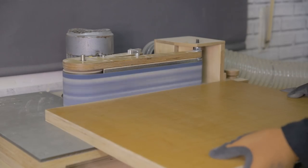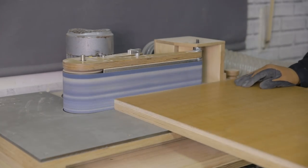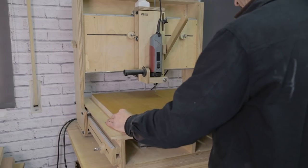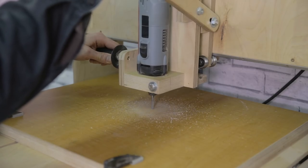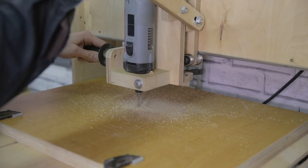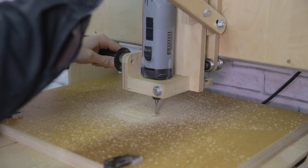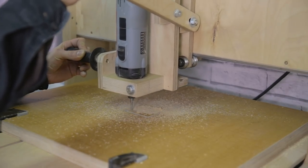Using the edge belt sander, I sand all the edges. Now with the 3D router, I can make a rebate in the place where the saw will be. I make several passes leaving a groove for the zero clearance.